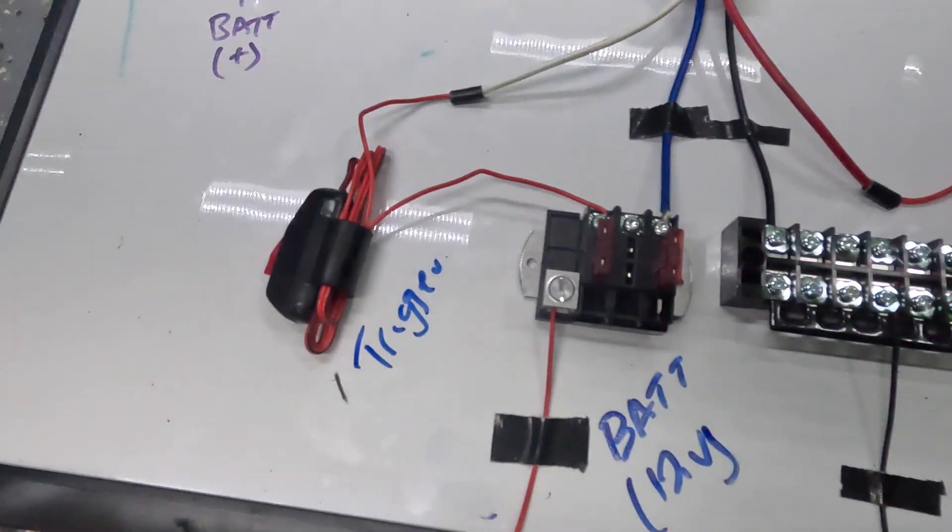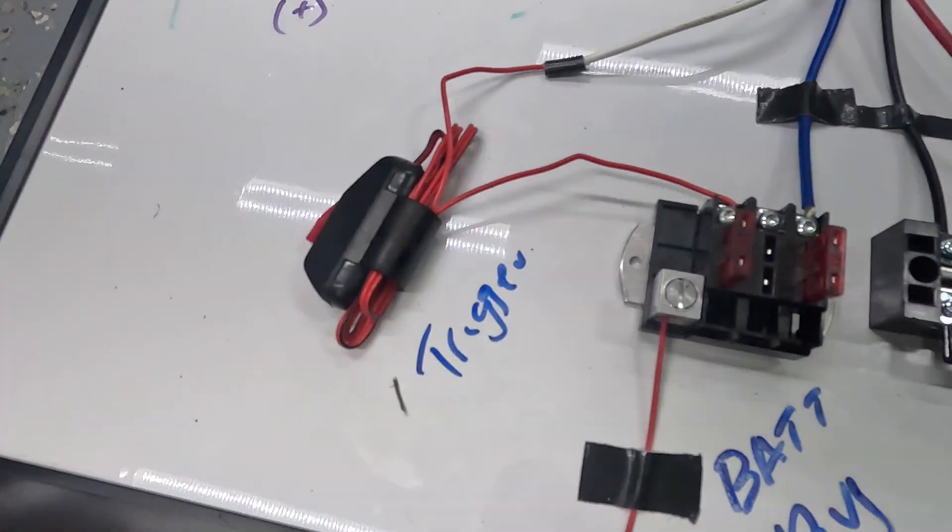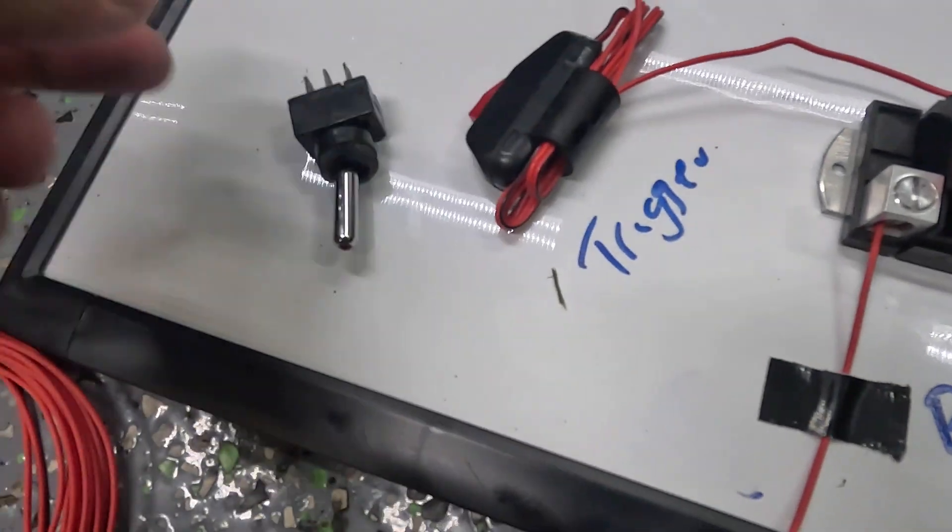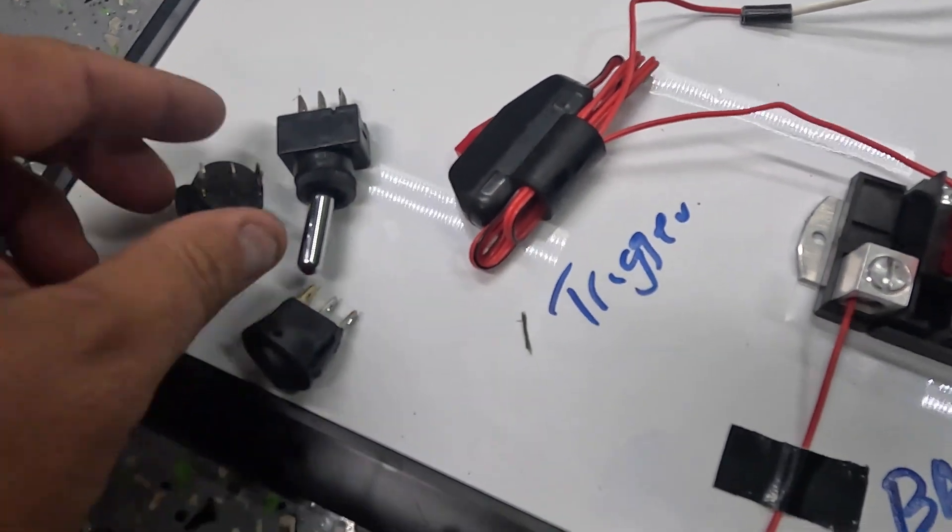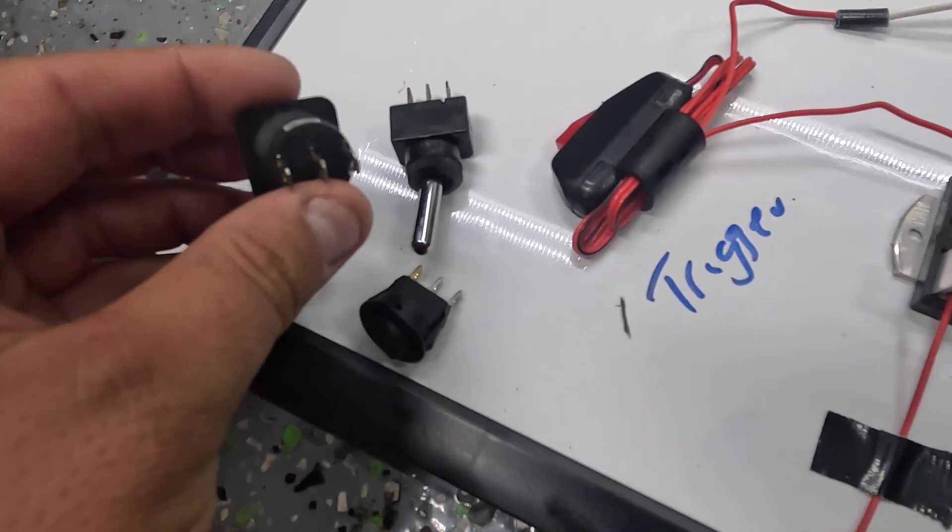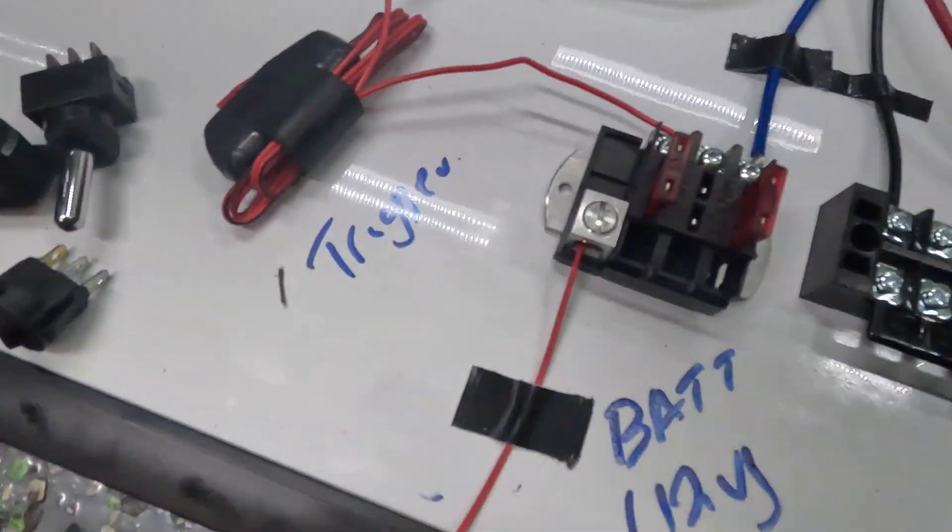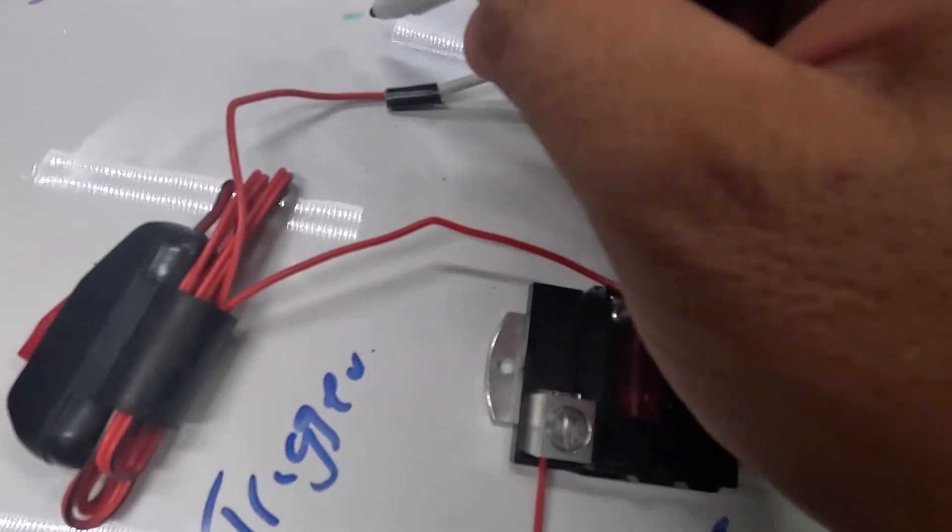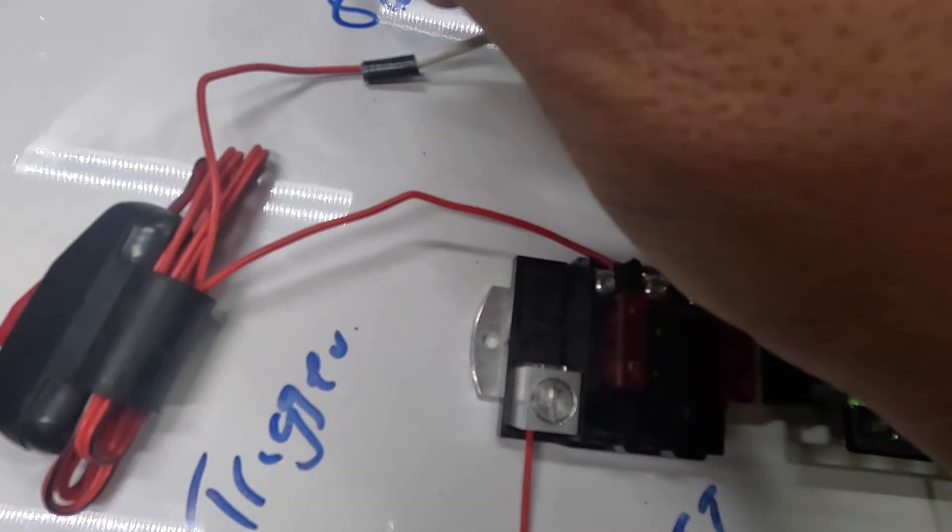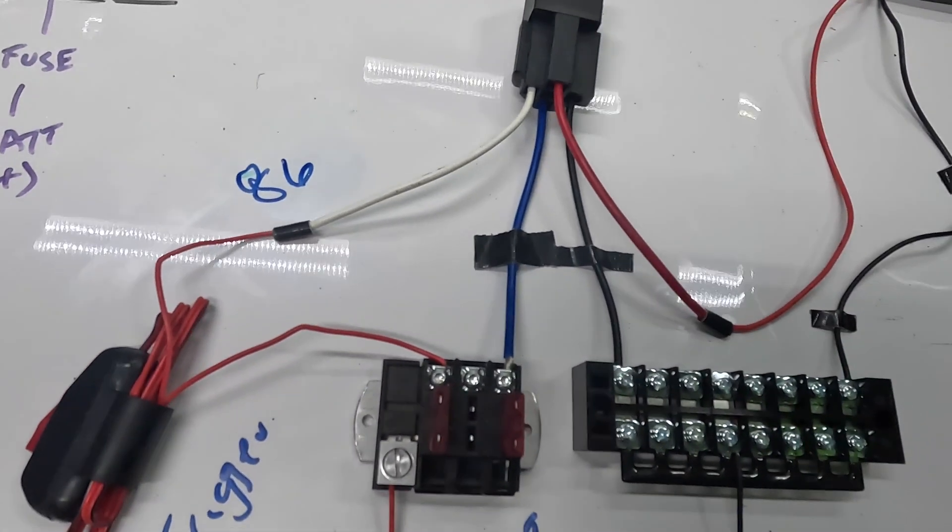To the left of that is your trigger. So in this case it is a momentary switch. This could also be a toggle, it could be rocker switches, really anything like that. I might make a video on these three pin rockers in the future. So basically you have your trigger in.